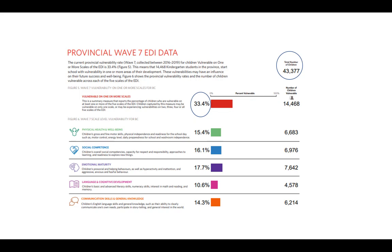That means that one-third, or over 14,000 children, are arriving at school vulnerable on one or more areas of development important to their future success and well-being. Below, the percentage for each individual scale is displayed. The scales with the highest vulnerability are emotional maturity at 17.7%, followed by social competence at 16.1%. The scale with the lowest vulnerability rate is language and cognitive development at 10.6%.